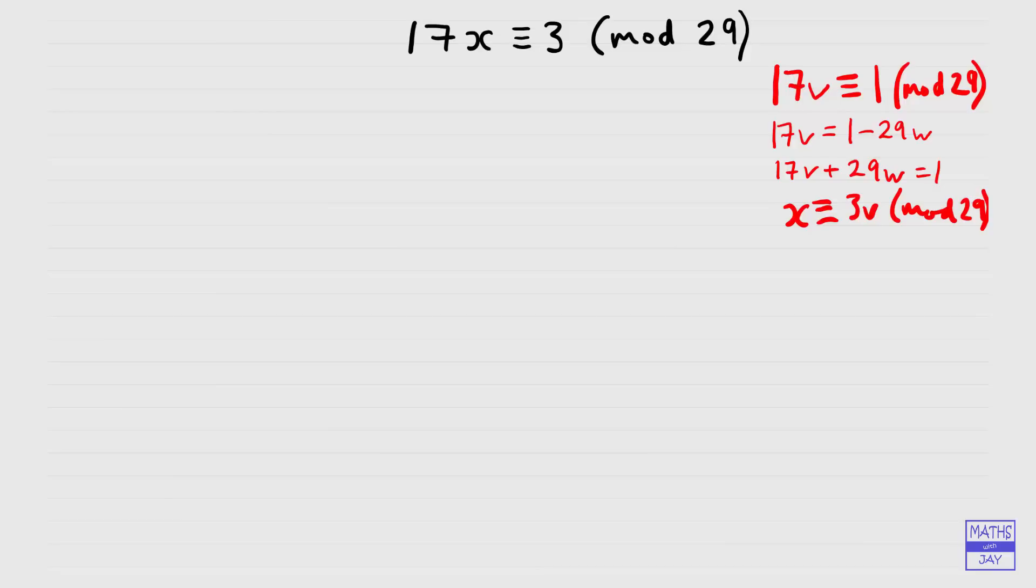Our final remainder will be 1. And then, remember what we'll need to do is make all the remainders the subject of each line, and then use backward substitution to get Bezout's identity to find what 1 is in terms of 17 and 29. In other words, we'll find what v and w are, v being the important thing here. So let's have a look at that.